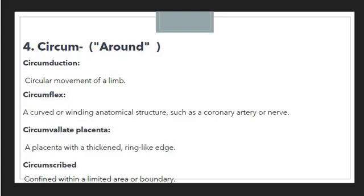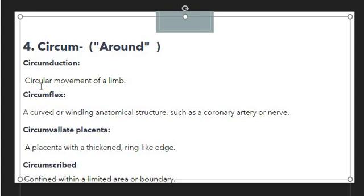So those are four examples for the 'ante' prefix: antebrachium, antecubital, antepartum, and antemortem. Now we move to the next prefix: 'circum'. Circum is used to make a sense of around. The first example is circumduction, which means circular movement of a limb. It makes a sense of around because we are moving in a circular way around something.